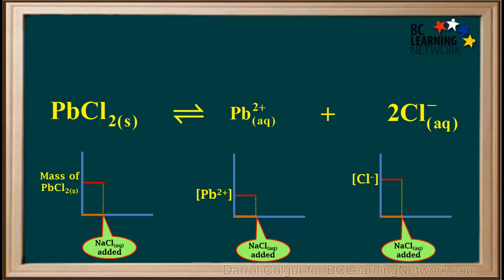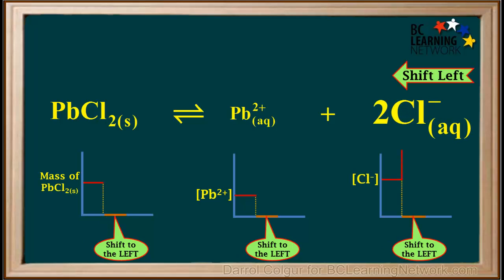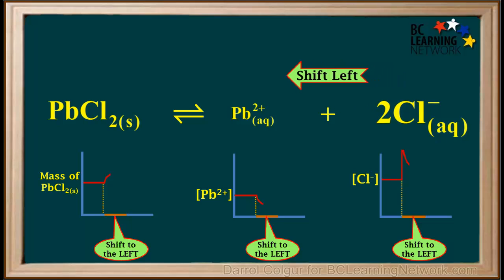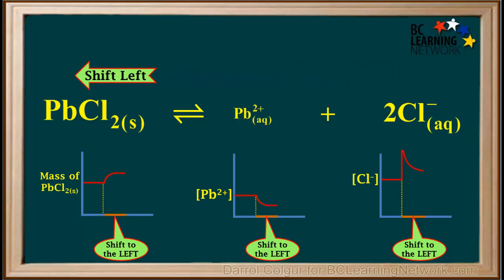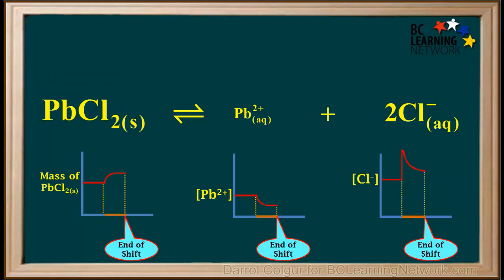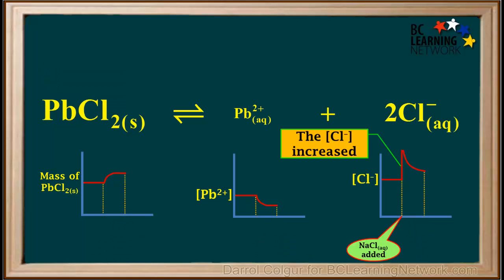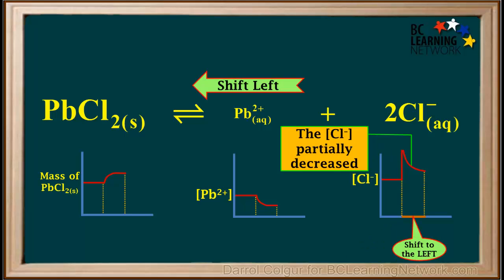When we add the NaCl, the concentration of chloride ions quickly increases. In order to compensate for the increased concentration of Cl⁻, the equilibrium will now shift to the left. Looking at the graph on the right for the chloride ion, we see its concentration increased when we added the NaCl. And as the shift to the left occurred, the concentration of Cl⁻ partially decreased, as shown by this curve on the graph.